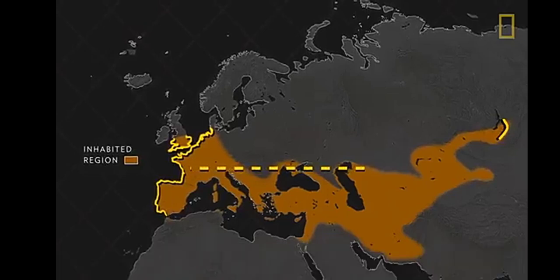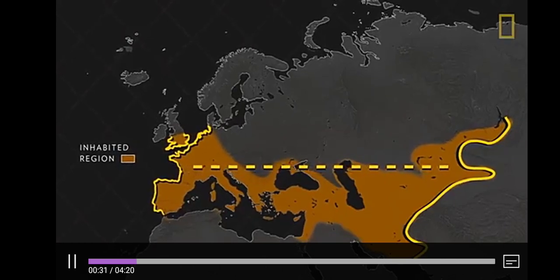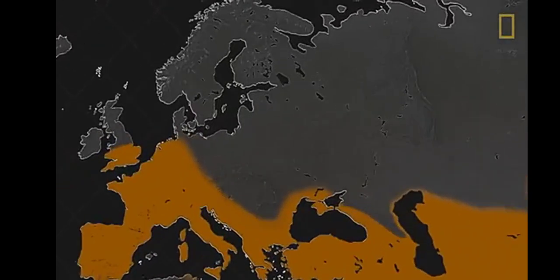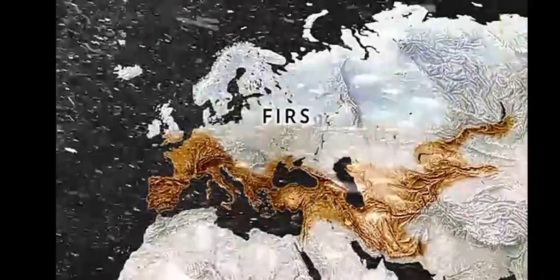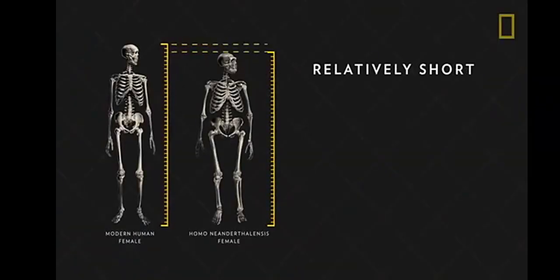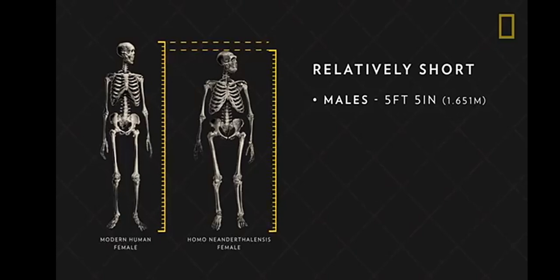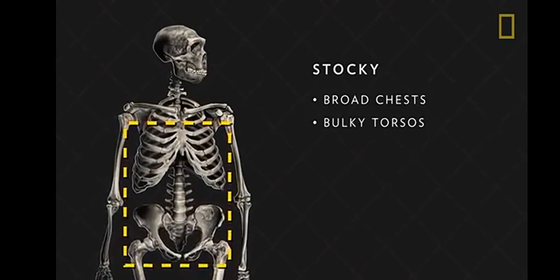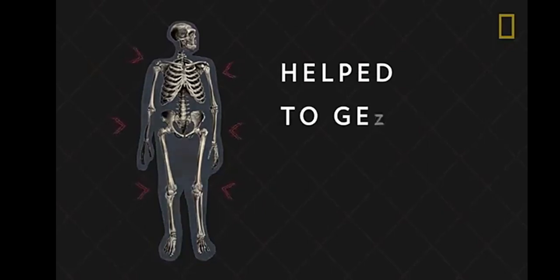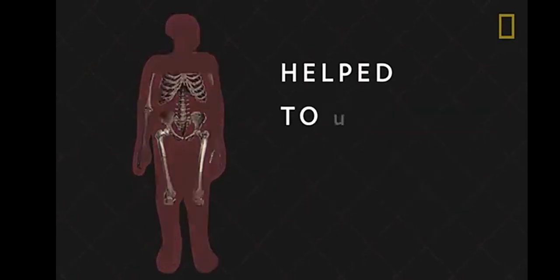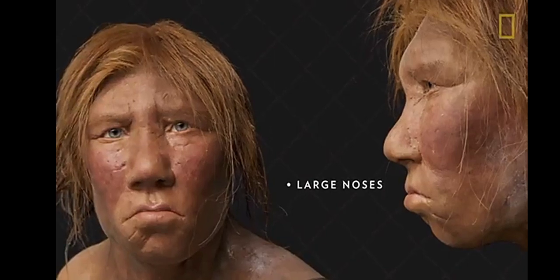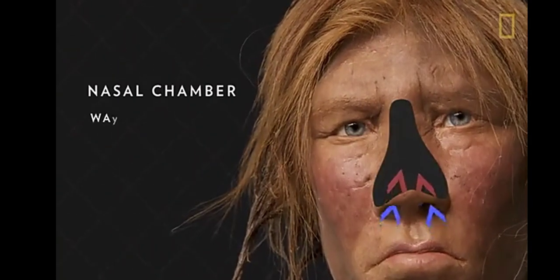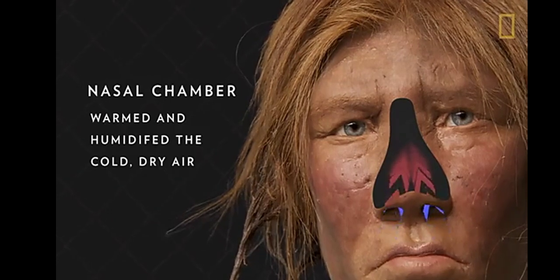Their habitat reached as far east as Central Asia and northward to modern-day Belgium, making them the first humans to survive a cold glacial ecosystem. The north's cold environment may have influenced Neanderthals' physique. Their bodies were relatively short, with males averaging 5 feet 5 inches and females 5 feet 1 inch. They were stocky, with broad chests, bulky torsos, and muscular limbs. Their large noses with relatively high bridges created a nasal chamber that warmed and humidified the cold, dry air in northern regions.